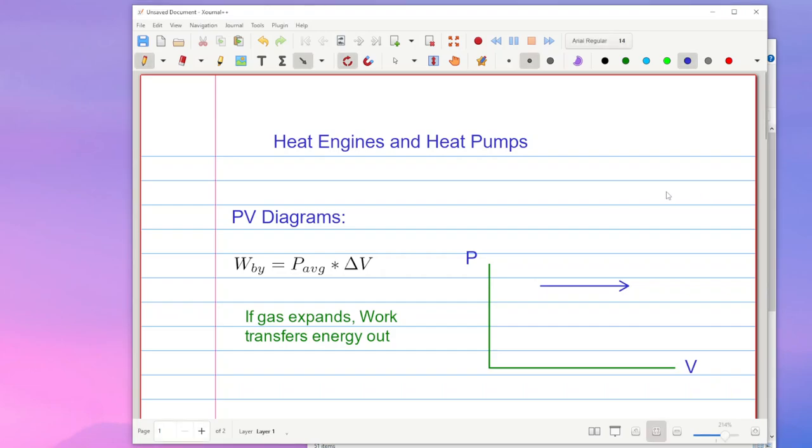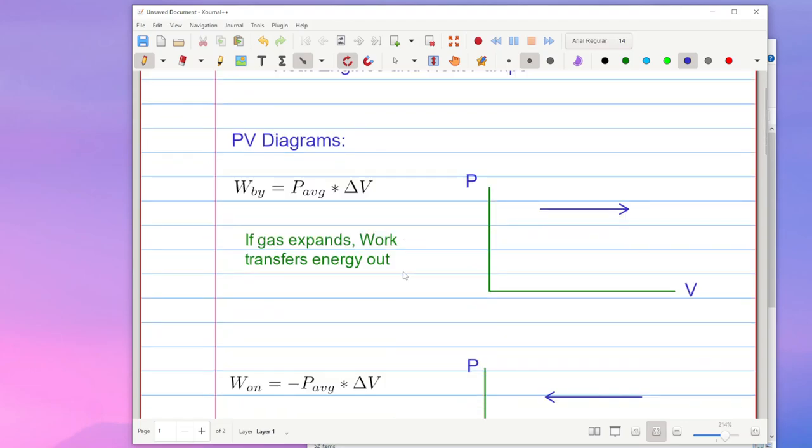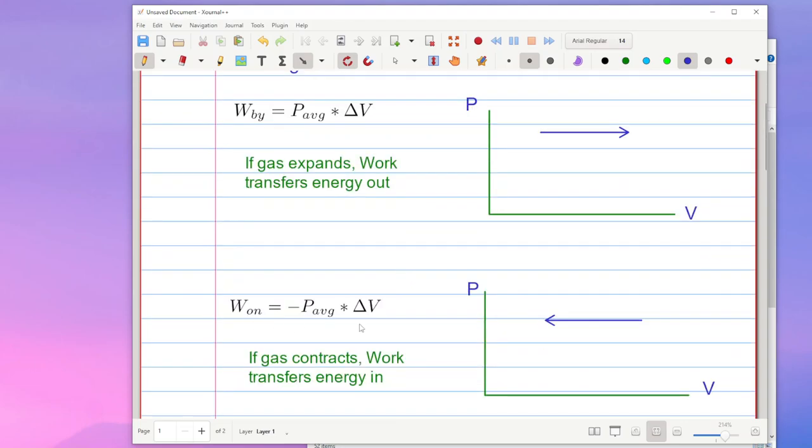In this video I want to talk about how heat engines and heat pumps relate back to PV diagrams. I only touched on this a little bit when we talked about work done with gases and how there's one equation for work done by a gas and another equation very similar but with a minus sign for the work done on a gas. Here I've used the average pressure just so that we can avoid the whole integral formula for right now.